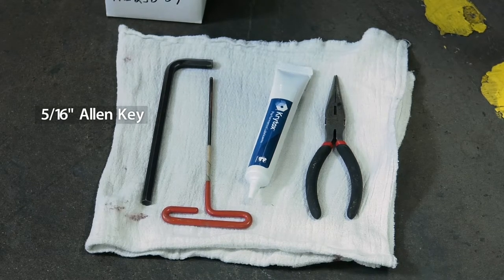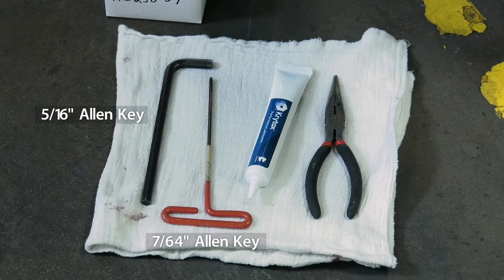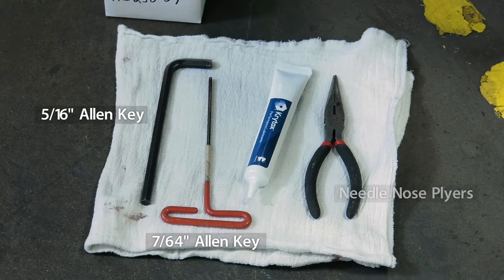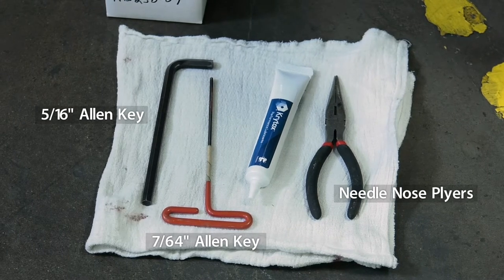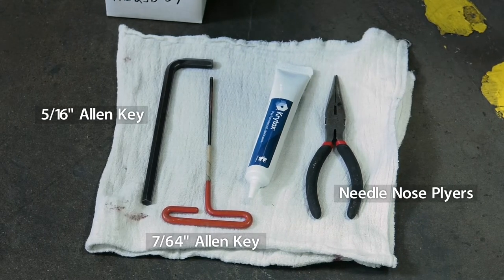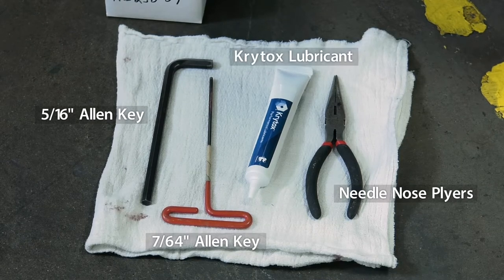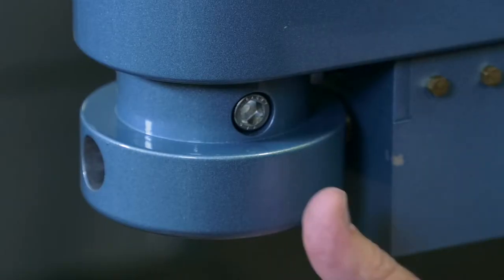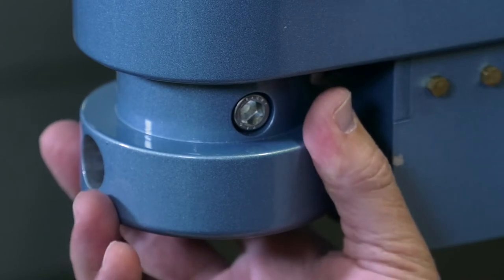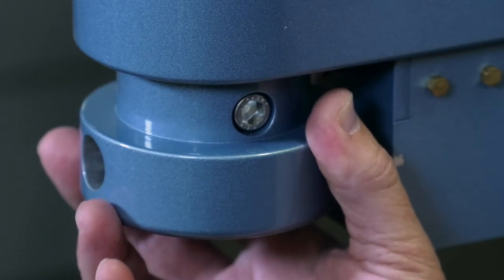We have the 5/16ths Allen key, we have the 7/64ths Allen key, we have a needle-nose pliers just in case we need to pull the three-way valve out, and then also the Krytox to lube the O-rings.